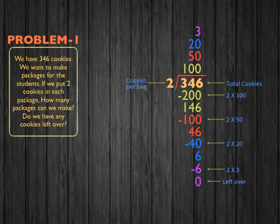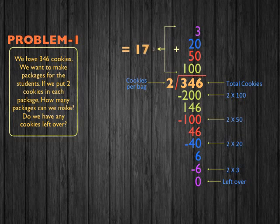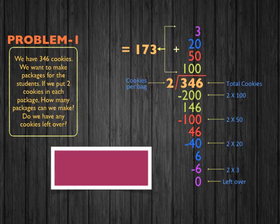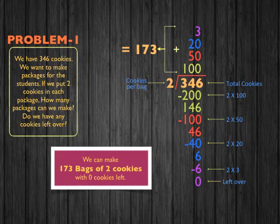6 minus 6 equals 0 — that's how many cookies we have left over. Now we add the total number of packages: 100 plus 50 plus 20 plus 3, which equals 173. So our answer is that we can make 173 bags of two cookies with zero cookies left over.